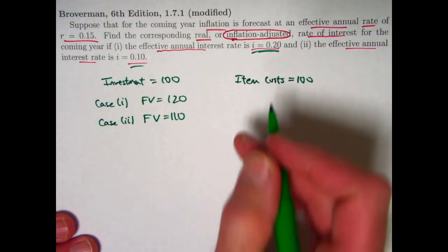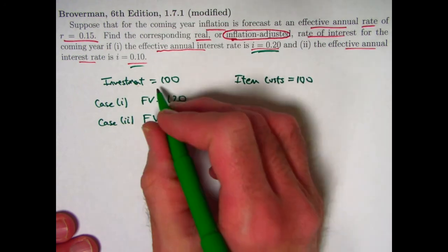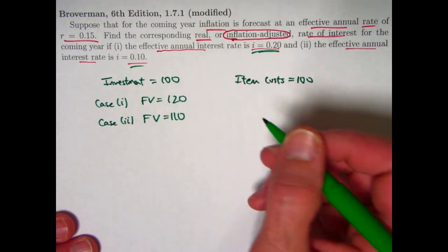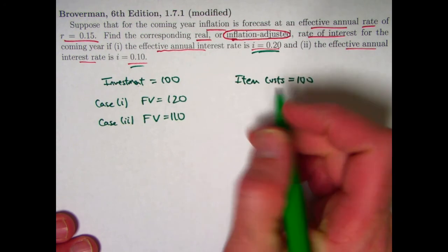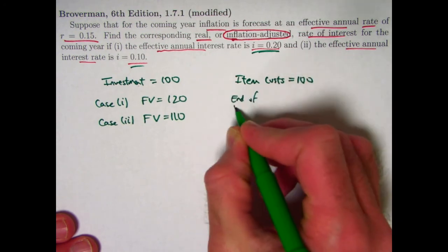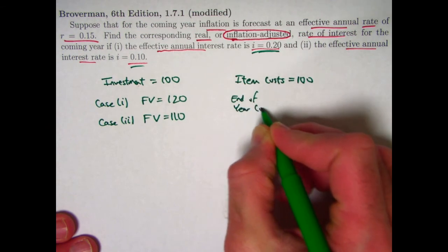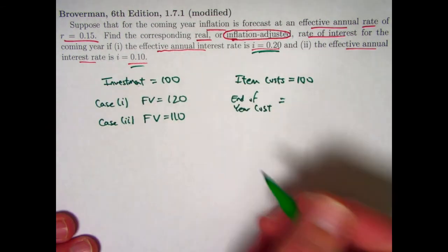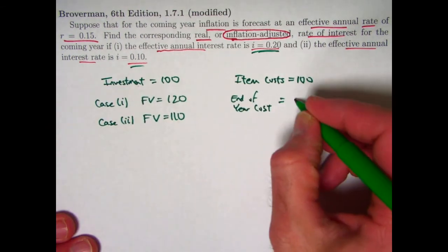Let's say you've got an item that costs $100 at the beginning of the year, or 100 I'll just say. At the beginning of the year, since you had 100 to invest, you could buy that item. The end-of-year cost for that item, assuming it's following the rate of inflation, is going to be 115.